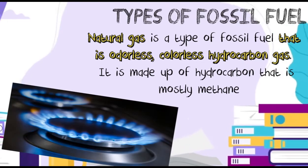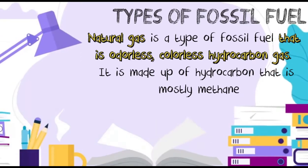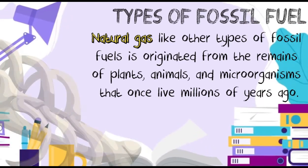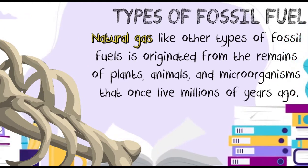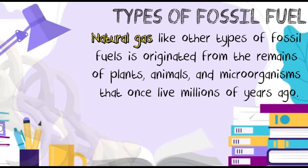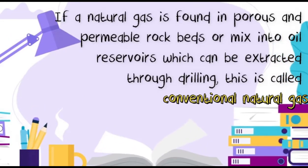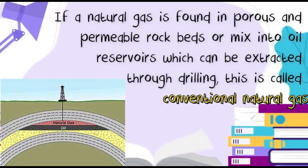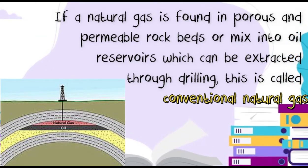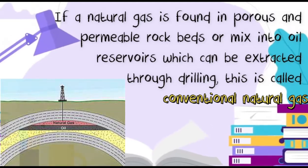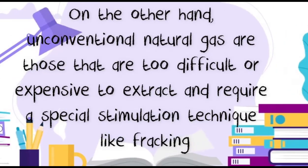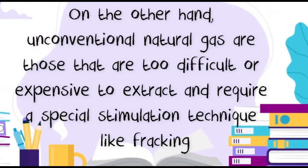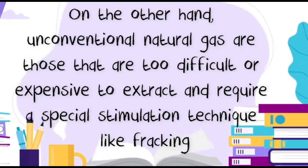Natural gas is a type of fossil fuel that is an odorless, colorless hydrocarbon gas. It is made up of hydrocarbons that are mostly methane. Natural gas, like other types of fossil fuels, originated from remains of plants, animals and microorganisms that once lived millions of years ago. This gas is found in porous and permeable rock beds and can be extracted through drilling — this is called conventional natural gas. Unconventional natural gas refers to gas that is too difficult or expensive to extract and requires special stimulation techniques like fracking.